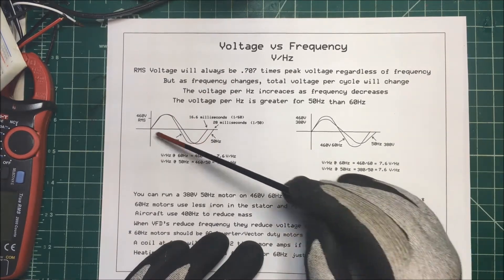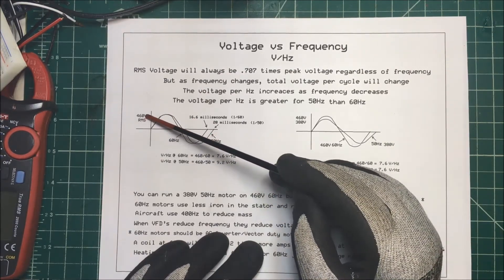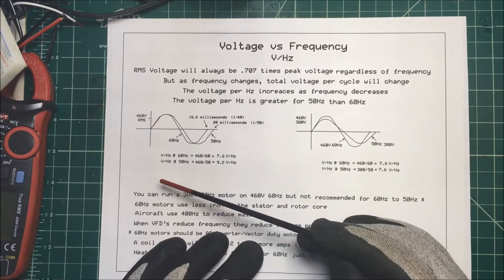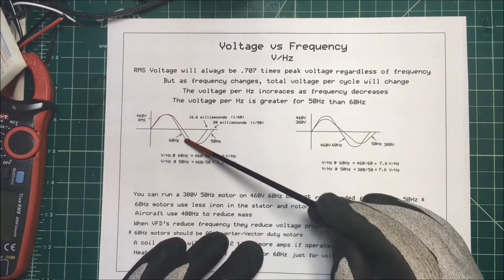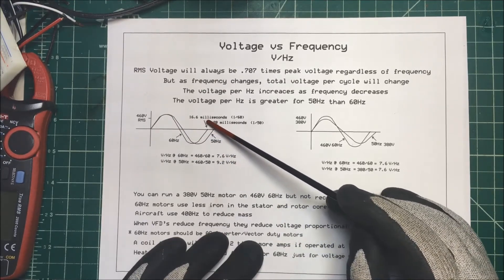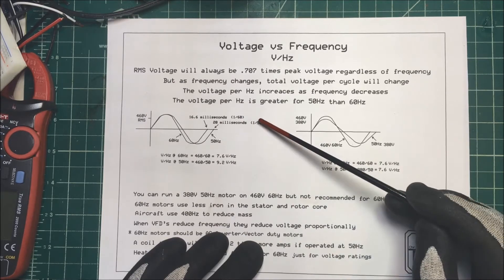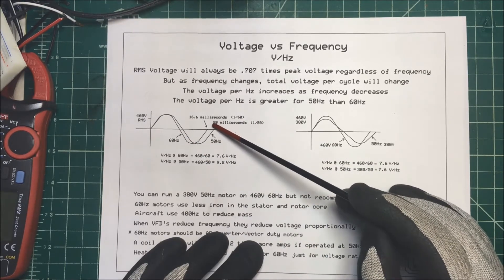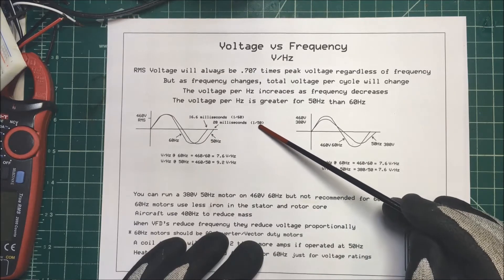So let's take a look at this sine wave here. We've got 460 volts RMS, standard North American voltage, and we have our two sine waves here. Now the period for the 60 hertz is 16.6 milliseconds. That 60 goes into one second. And the period for our 50 hertz is 20 milliseconds. 50 goes into one.